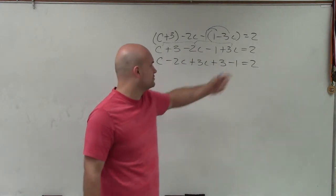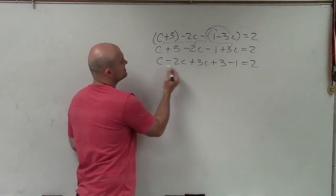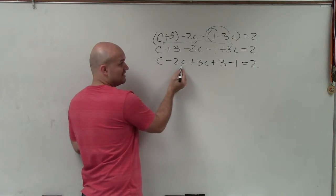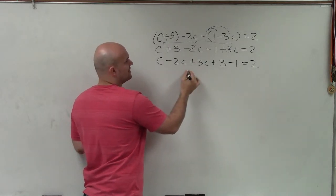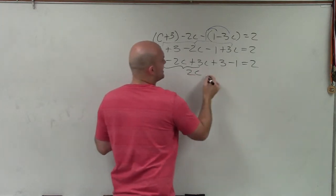Therefore I write the 3 and the negative 1 at the end equals 2. So now you can see this is c minus 2c which would be negative c plus 3c, so my final combination of these all together is 2c. 3 minus 1 is going to be 2 plus 2 equals 2.